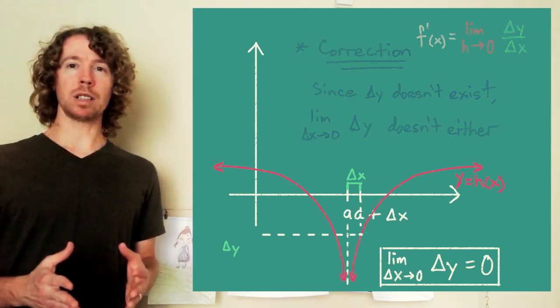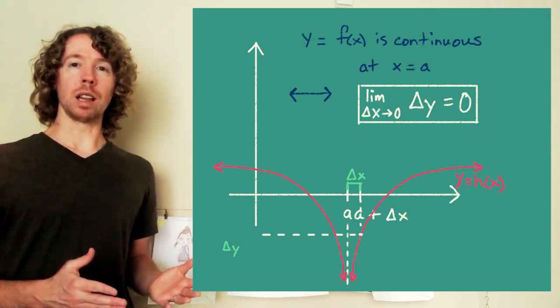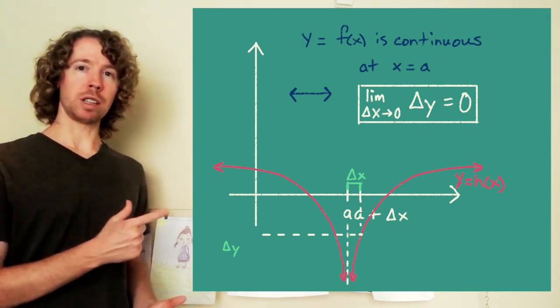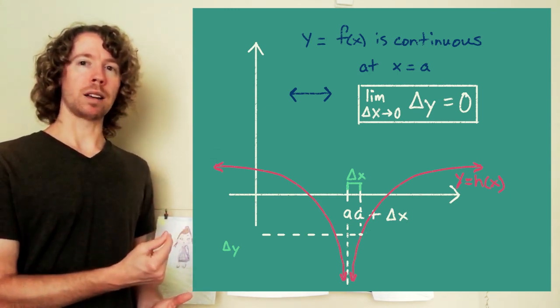So a function is continuous at x equals a if and only if the limit as you're changing x shrinks down to zero of change in y is zero.